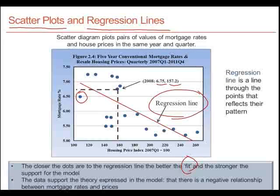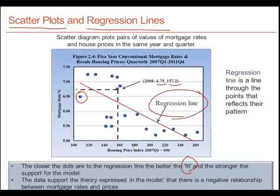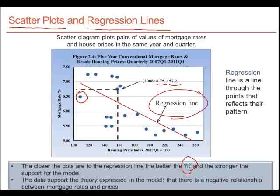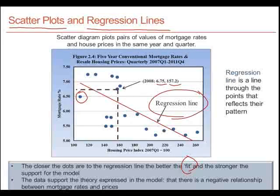In this particular example, the data do support the theory expressed in the model. The theory developed earlier is that at lower mortgage rates, people can afford higher monthly payments and are therefore willing to pay more for their house, putting upward pressure on housing prices. So when we draw this scatter plot, we see that there is indeed a negative relationship between mortgage rates and prices. There are other influences on the price of housing apart from the mortgage rate — for instance, if incomes were higher, people might spend more on housing — and we will examine these other influences in the next lesson.